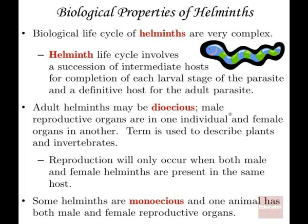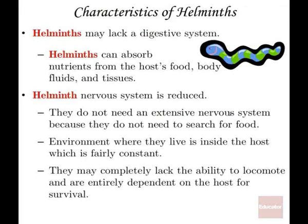The adult helminths can be dioecious — a term used exclusively in plants and invertebrates, not in mammals. These helminths also have a monoecious stage where both the male and female organs are in the same organism. In terms of reproduction in the human host, it can really only occur when both the male and female are present in the same location in the same human host. That's very important.